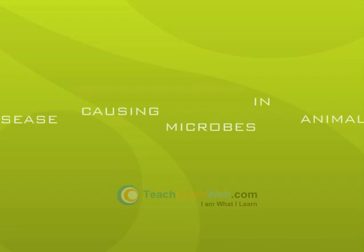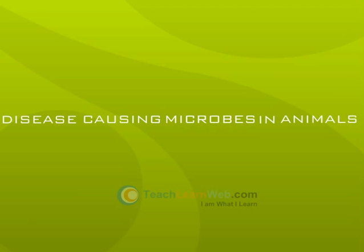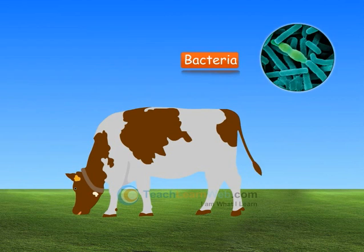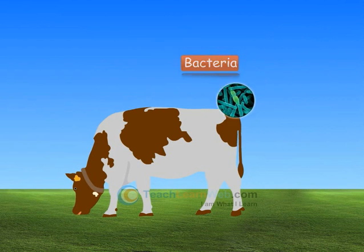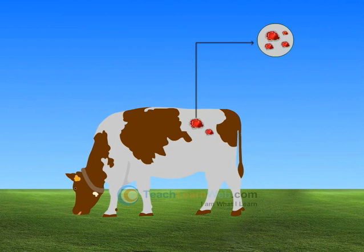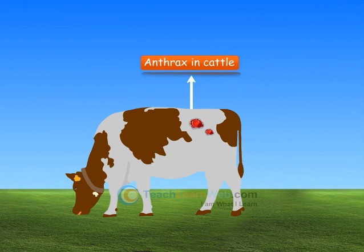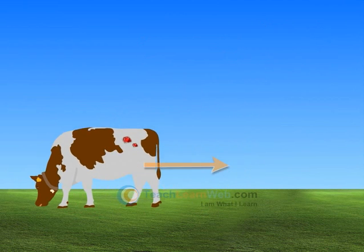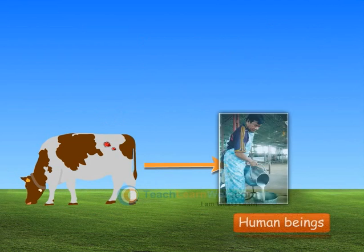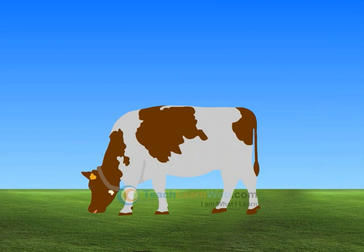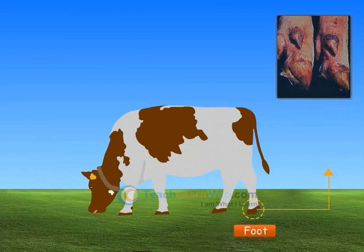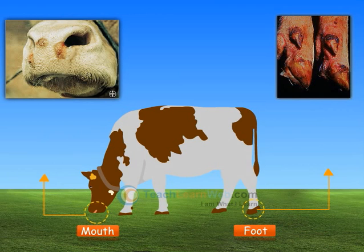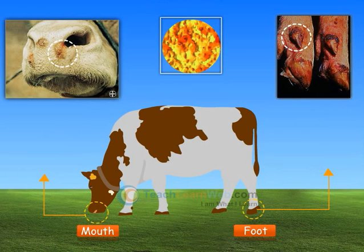Disease-causing microbes in animals: some bacteria cause a serious disease called anthrax in cattle, which is also transmitted to human beings. Foot and mouth disease is another serious disease of cattle, caused by a virus.